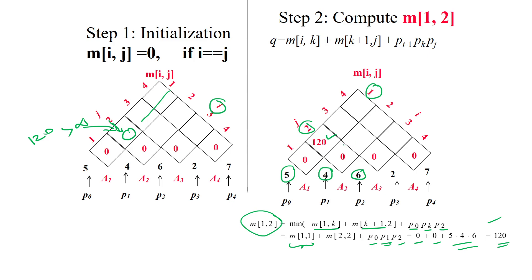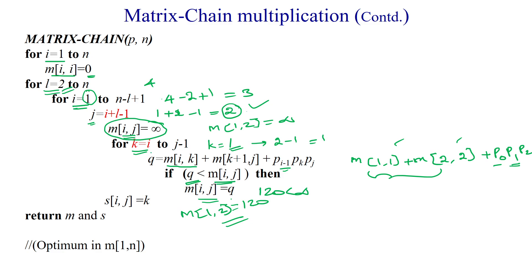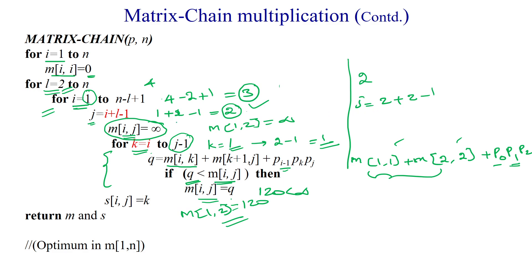We increment k to 2, but the loop runs only until j−1=1, so the for loop exits. Then i is incremented to 2. Now j = 2 + 2 − 1 = 3. We compute m[2,3], which is currently infinity. k ranges from i=2 to j−1=2, so k=2.